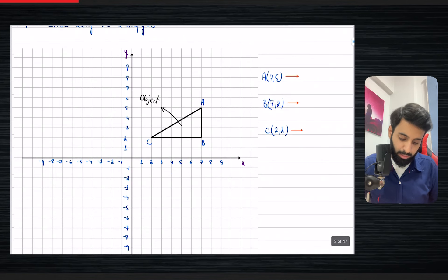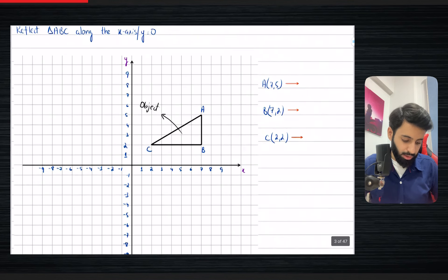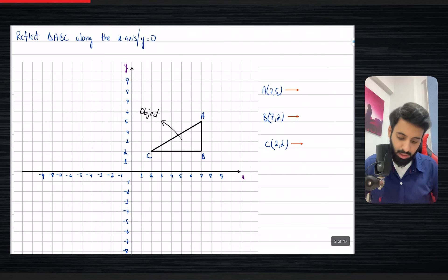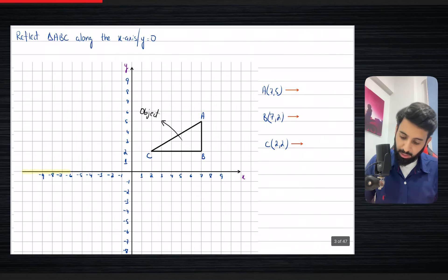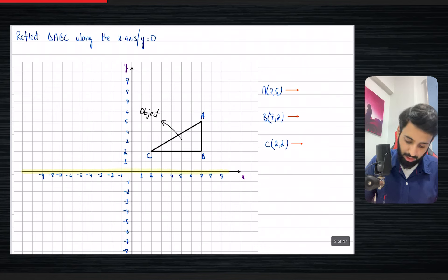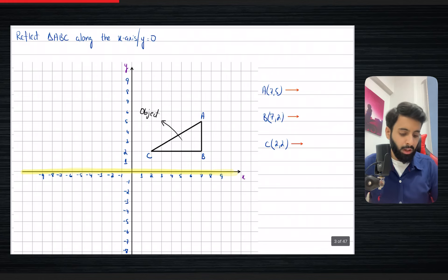We're going to be taking this object here, triangle ABC. I've written down its coordinates, and we're going to be reflecting it along the x-axis, which is y equals zero. I want to highlight the x-axis so you can see it clearly.